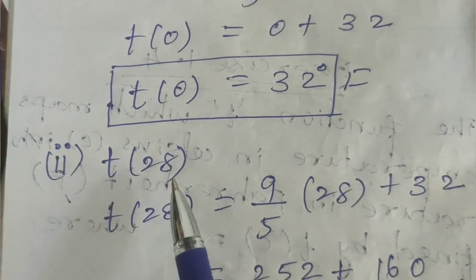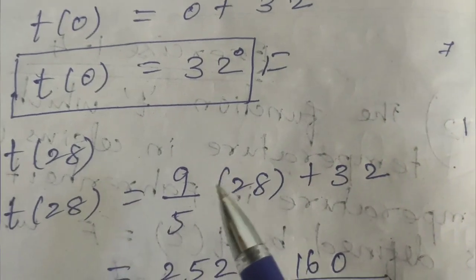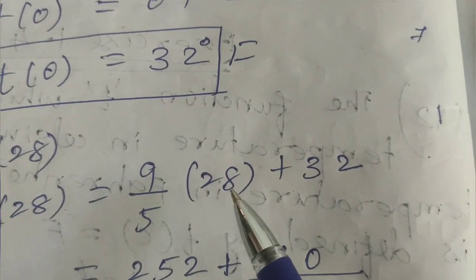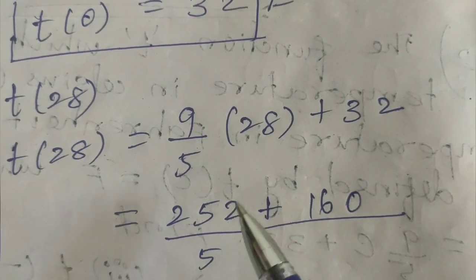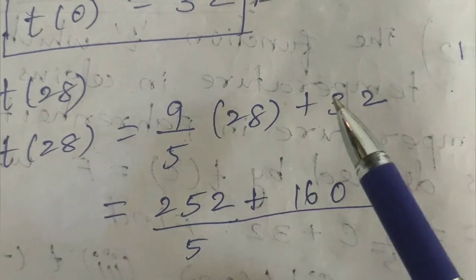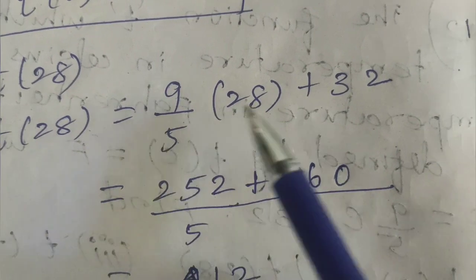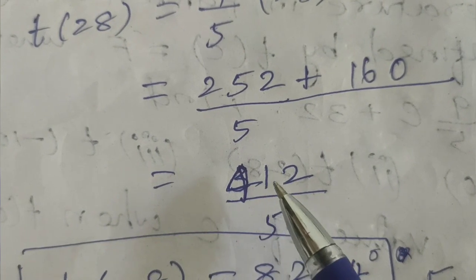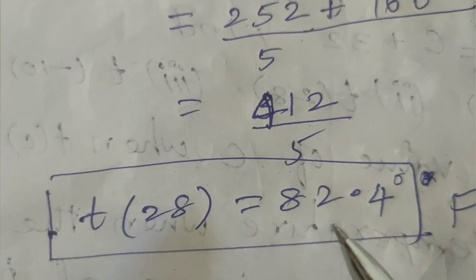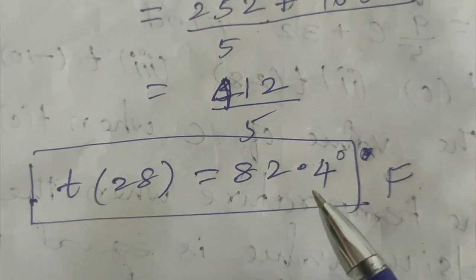The second sub-question is T of 28. We substitute C equals 28. T of 28 equals 9 by 5 into 28 plus 32. 9 into 28 equals 252, divided by 5, plus 32. This gives T of 28 equals 82.4 degrees Fahrenheit.